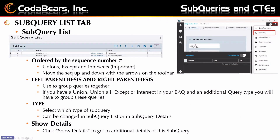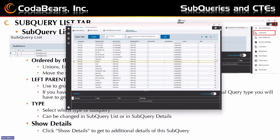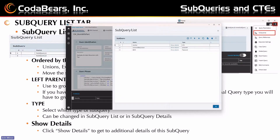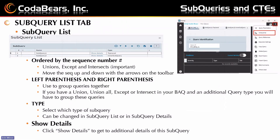Let's talk about the subquery list tab. This is specifically something within your BAQ. If you go to the overflow on any of the tabs within your BAQ, you can go to subqueries and that will pull up your subquery list. The subquery list is ordered by sequence number, and it does matter in certain cases — for unions, except, and intersects it definitely does, because it will union, intersect, or except with the query above it. You can move them up and down with the arrows.